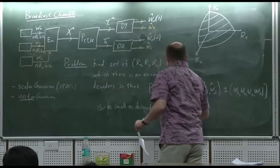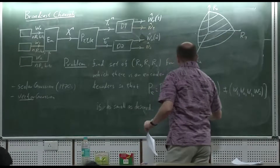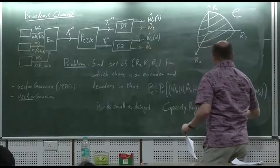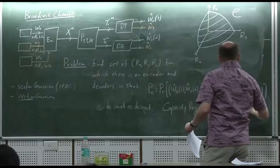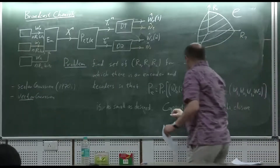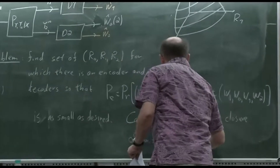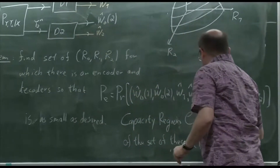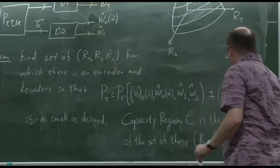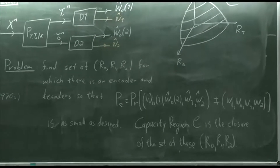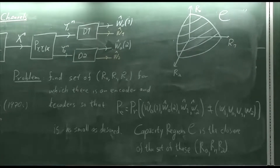The capacity region C is the closure of the set of achievable rate triples (R0, R1, R2). We'll look at special cases where the problem is solved and build up tools to understand the capacity region. The first important property, already in Tom Cover's paper, is that the capacity region depends only on the marginals P(Y1|X) and P(Y2|X), not the joint P(Y1, Y2|X).